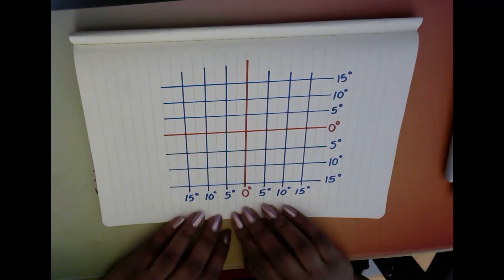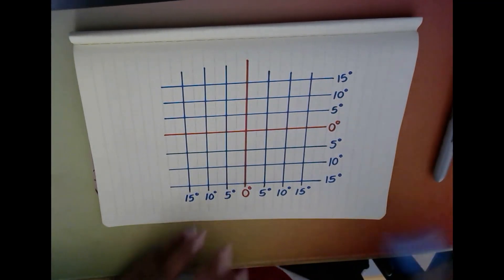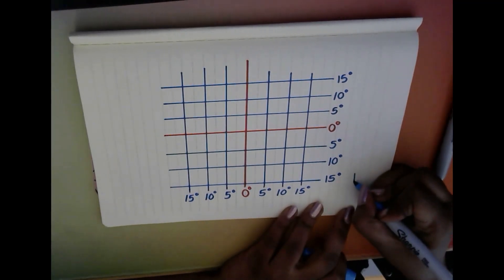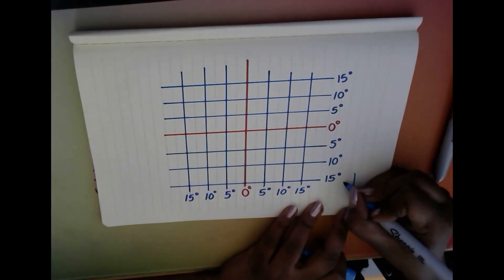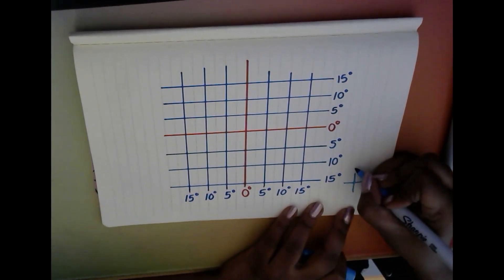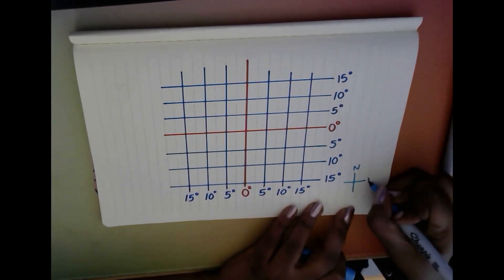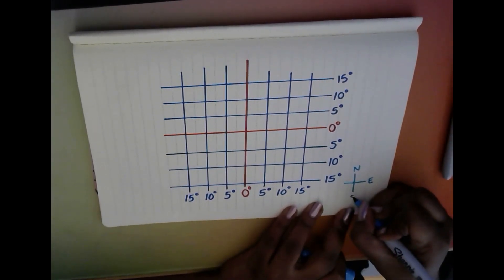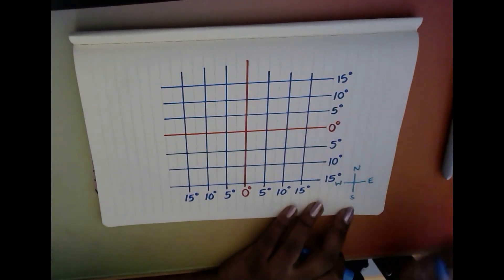If it helps, I always tell my students that if you want to, you can just draw a very quick compass. So we can go north, east, south, and west—and maybe that'll help you to remember which direction we are looking at.